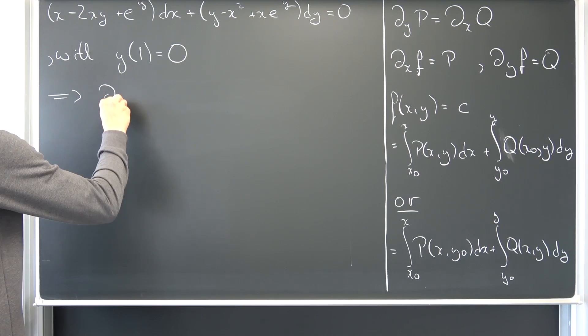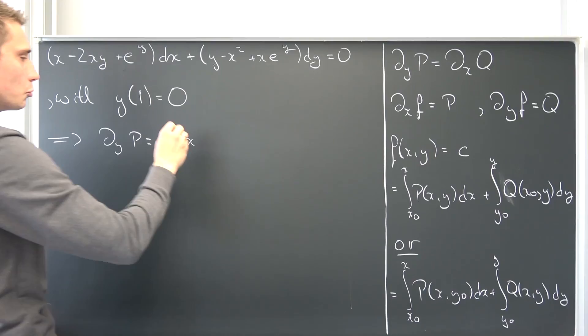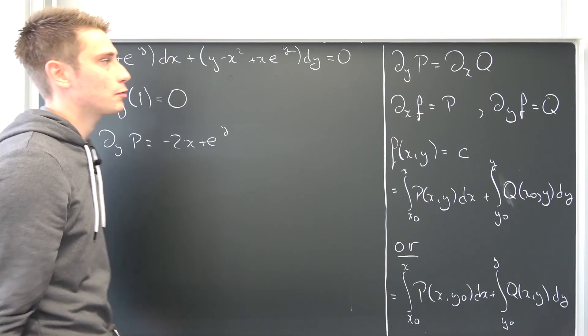Let us check for exactness. Del_y P is thus nothing but — okay, x is just going to vanish, so that's quite easy — then we are going to have negative 2x plus e to the y.